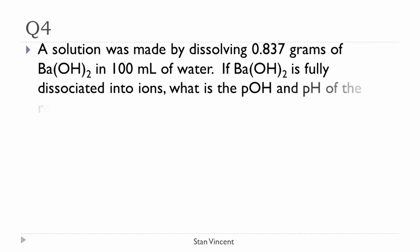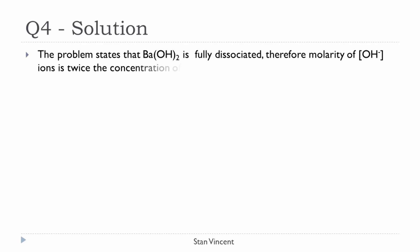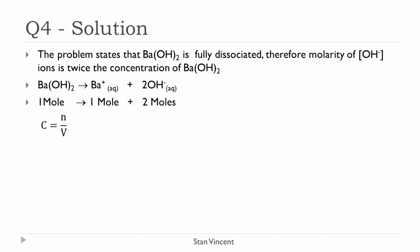Question 4: A solution was made by dissolving 0.837 grams of barium hydroxide in 100 milliliters of water. If barium hydroxide is fully dissociated into ions, what is the pOH and pH of the resulting solution? Since barium hydroxide is fully dissociated, it is treated as a strong electrolyte. Knowing the molarity of barium hydroxide gives us the molarity of hydroxide ions. The first step is to determine the molarity of barium hydroxide.